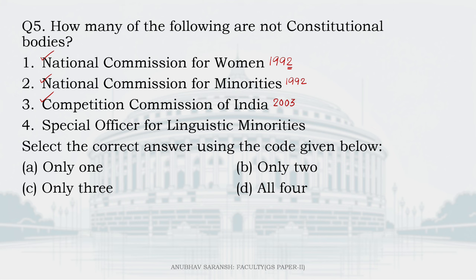The Special Officer for Linguistic Minorities is actually a body mentioned in the Constitution under Article 350B — added through the Seventh Amendment Act of 1956 — making it a constitutional body. So items one, two, and three are not constitutional bodies — that is three such bodies. The right answer is C.